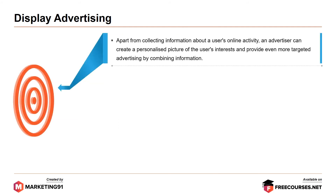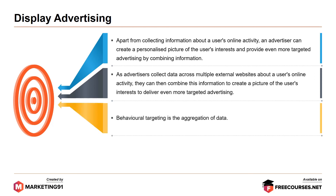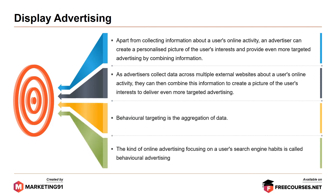Moving further, apart from collecting information about a user's online activity, an advertiser can create a personalized picture of the user's interest and provide even more targeted advertising by combining information. As advertisers collect data across multiple external websites about a user's online activity, they can then combine this information to deliver even more targeted advertising. Behavioral targeting is the aggregation of data. The kind of online advertising focusing on a user's search engine habits is called behavioral advertising.